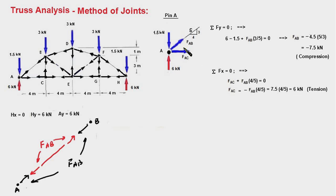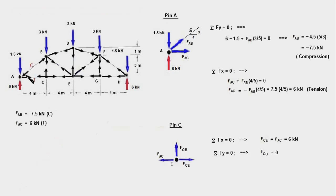We have found two internal forces: member AB is under compression at 7.5 kN, and member AC is under tension at 6 kN. We update the diagram by reversing the direction of the force FAB so it now points towards the pin at A and at pin B, and we write C to denote compression. We record FAB as 7.5 kN (C) and FAC as 6 kN (T) on the diagram.